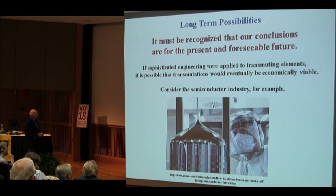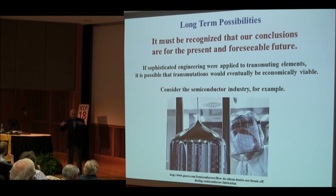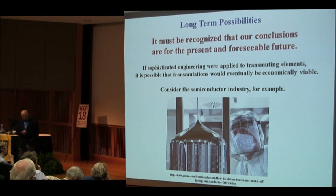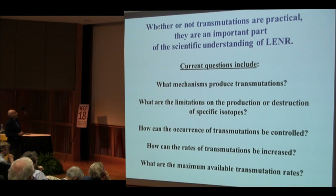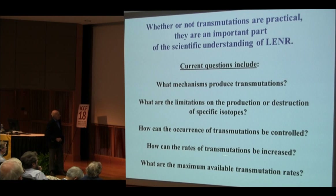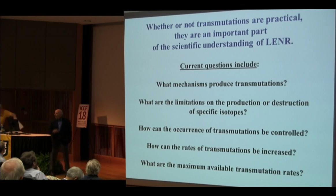I put this picture of a growing silicon crystal here. When I was in high school the silicon boule was that big; now the semiconductor industry is going from 300 mm to 450 mm wafers — almost half a meter in diameter — and that took a gazillion dollars and half a century. So if you go ahead half a century, it could be that transmutation becomes practical, but it's going to take a remarkable amount of money. Whether or not transmutations are practical, they're an important part of the science of LENR. Current questions include: what mechanisms produce them, what are the limitations, can the occurrence be controlled, can the rates be increased, and what are the maximum available rates? Thanks for your attention.